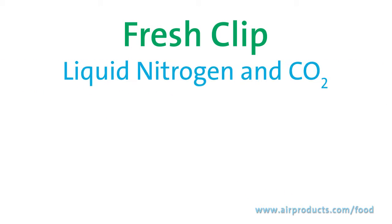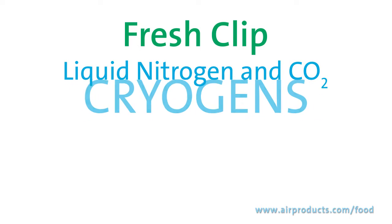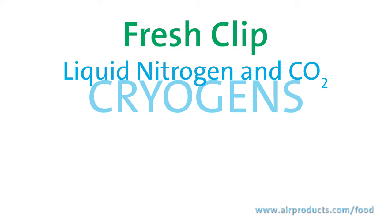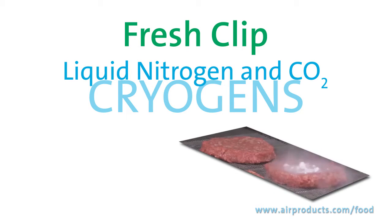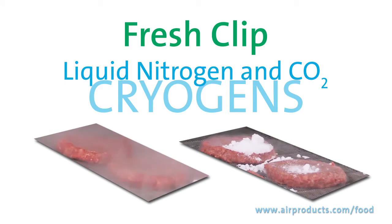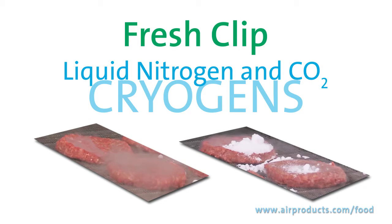In today's Fresh Clip, we're going to learn a little bit about the difference between liquid nitrogen and CO2. They're both cryogens, but when CO2 hits the food product, it creates snow and surrounds the product with snow. When liquid nitrogen hits the food product, it turns instantly to an extraordinarily cold gas. Let's see what this looks like in our food lab.